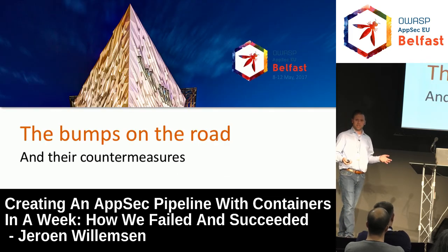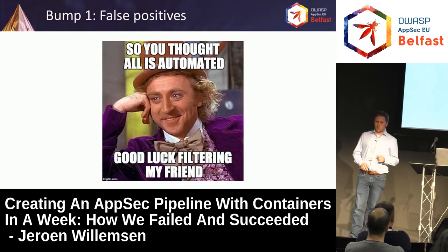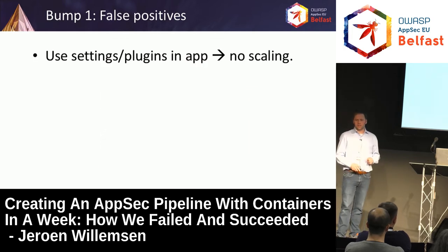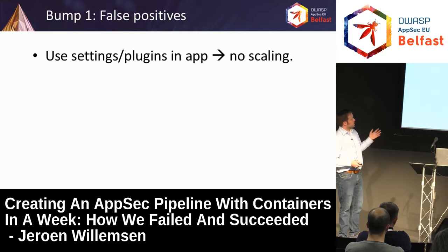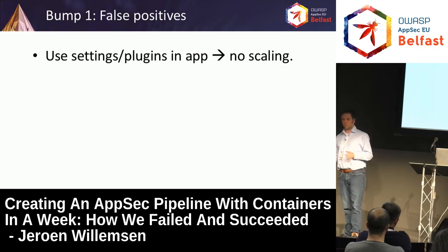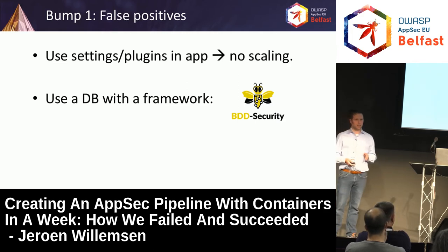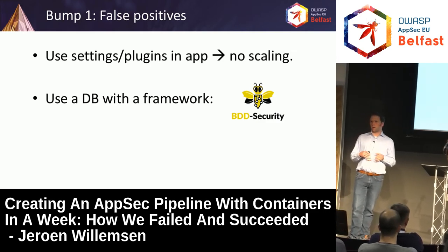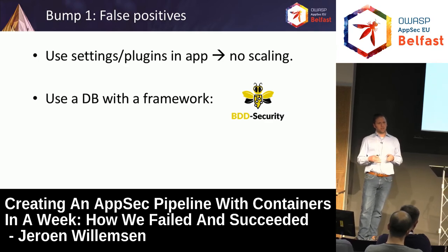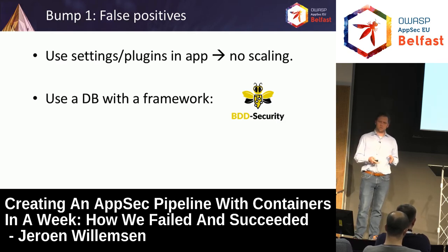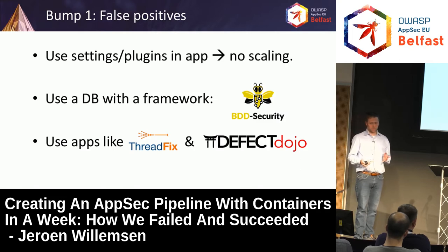Of course we had bumps on the road. You have to start filtering — especially with Clair there's a lot to filter, and with ZAP too. We first thought about using a plugin in ZAP to handle filtering, but that doesn't scale, especially per application. We figured maybe we should use BDD Security, but maintaining a feature file or whitelist table in a distributed manner with multiple people means a lot of administration overhead — it works for a few apps, but this needed to scale to many applications.